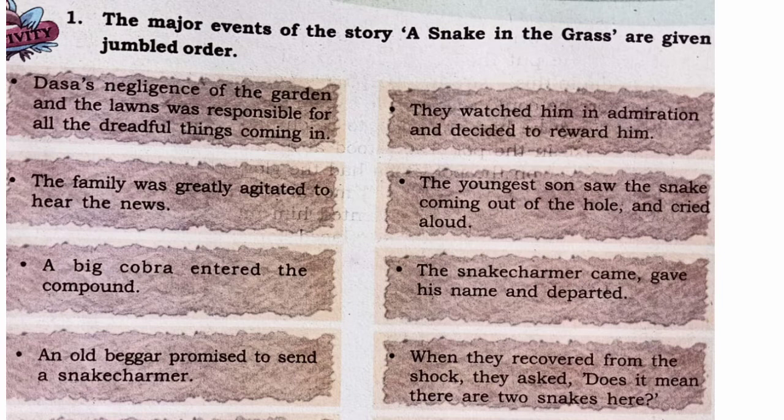Page number 27. The major events of the story 'Snake in the Grass' are given in jumbled order. Our duty is to sequence the events in the flowchart given below. We can arrange the events in chronological order.